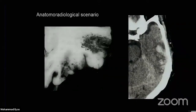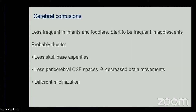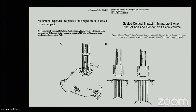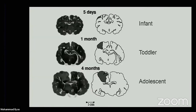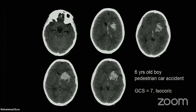This is the normal radiological and anatomo-radiological aspect of a contusion. Contusions are very rare in kids because there are no skull base asperities, there is less pericerebral CSF space so the brain cannot move as in young adults, and there is different myelination. This is demonstrated by animal models - translational models showing that with the same force applied at different developmental moments in rats, you obtain different kinds of contusions, probably due to myelination. Young adults and adults are more prone to develop contusions, while kids are more prone to develop diffuse brain damage or very tiny focal contusions.